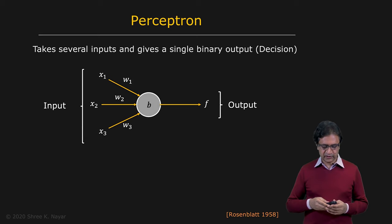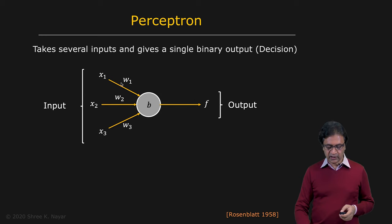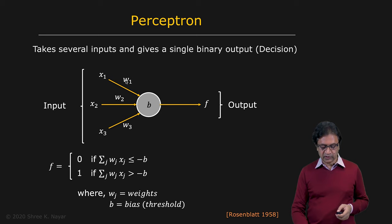Now let's talk about a very simple type of neuron, which is called the perceptron. The perceptron essentially takes in several inputs, shown as X1 through X3 here. These are the inputs and it produces a binary output or a decision. The way it does this is that it takes the inputs and multiplies them with these weights shown here W1 through W3, and then compares the weighted sum of the inputs with what's called a threshold or a bias B.